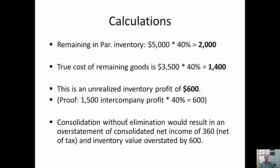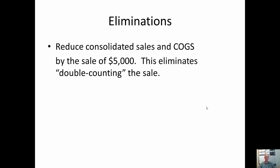We need to eliminate this unrealized profit in ending inventory. We're going to take the $600 and eliminate that profit, and also eliminate the tax that went with it — 40% tax times $600 is $240. If we did not do the elimination, we would have an overstatement of consolidated income by $360, and inventory on the balance sheet would also be overstated by $600. The first elimination — whether this inventory has been sold to external parties or not — is to take away the full intercompany sale amount from both sales and cost of goods sold, so you won't be double counting the sale.